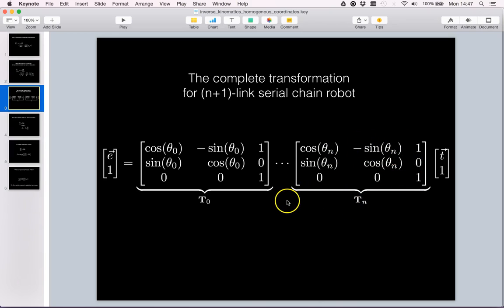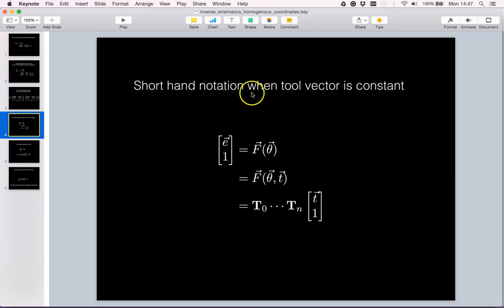This allows us now to write up in shorthand notation that our end effector in homogeneous coordinates is equal to a sequence of transformation matrices multiplied together, multiplied by the tooltip vector in homogeneous coordinates.